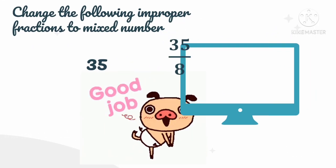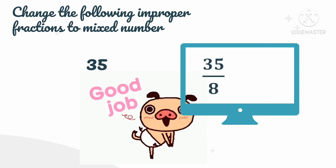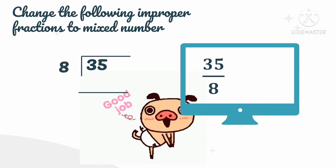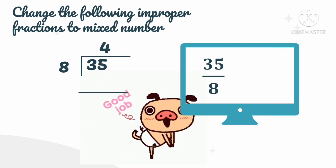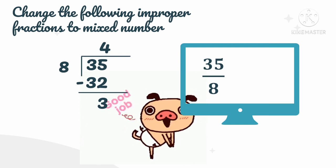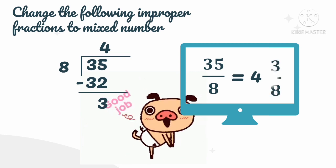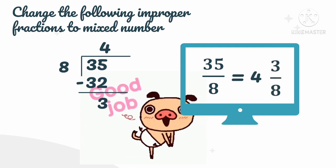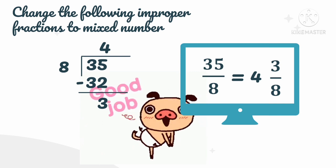Let's try another example: change 35 over 8 into a mixed number. Again, we divide the numerator by the denominator — 35 divided by 8. How many 8s are in 35? We get 4. Multiply: 4 times 8 is 32. Then subtract: 35 minus 32 is 3. Now changing to a mixed number, the quotient 4 becomes the whole number, the remainder 3 becomes the numerator, and the divisor 8 becomes the denominator. Therefore, 35 over 8 as a mixed number is 4 and 3 over 8.